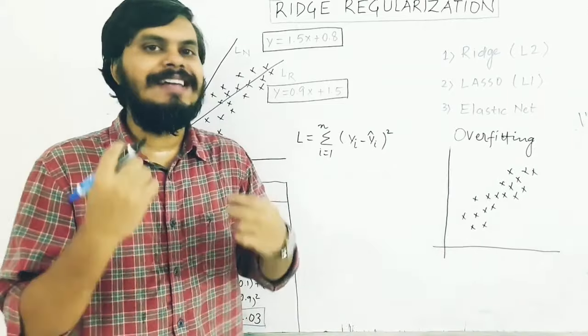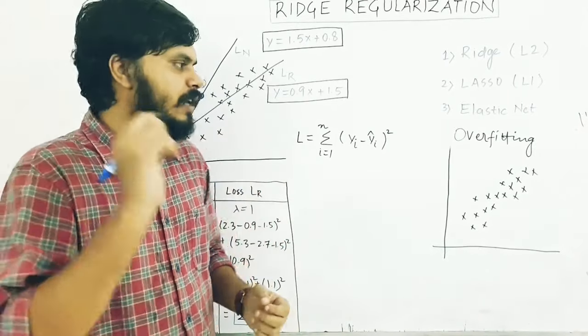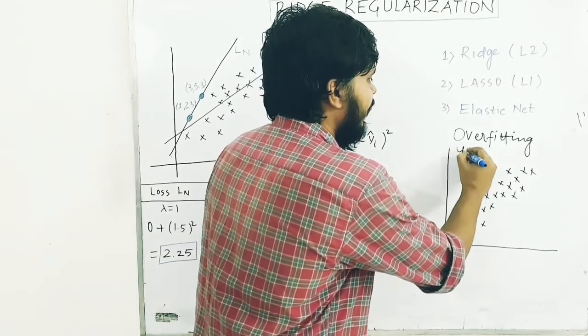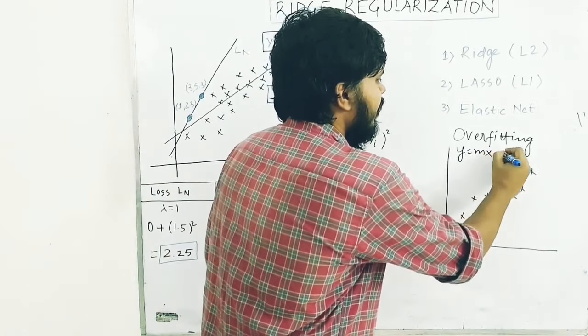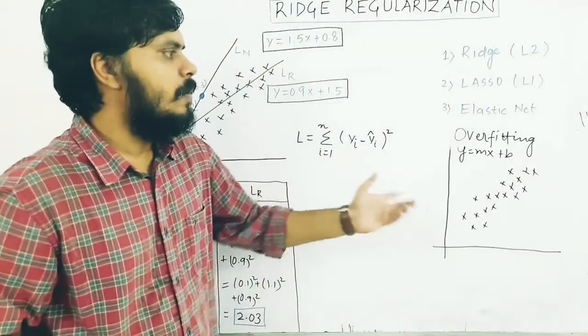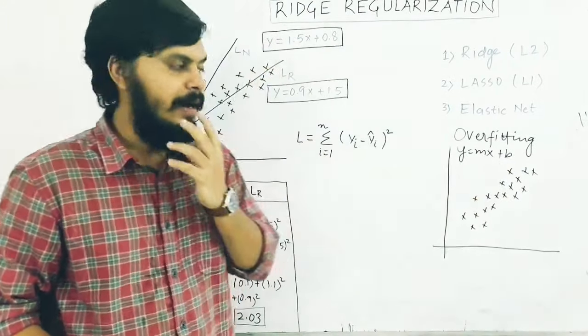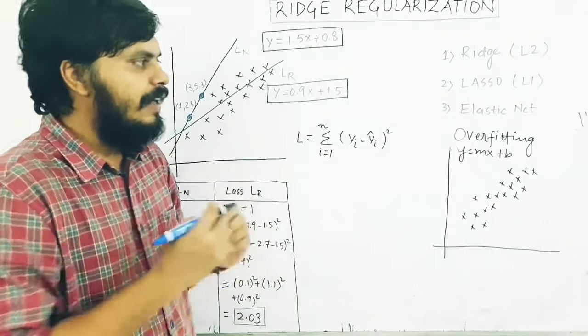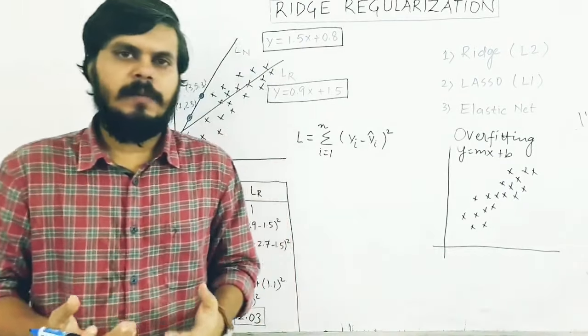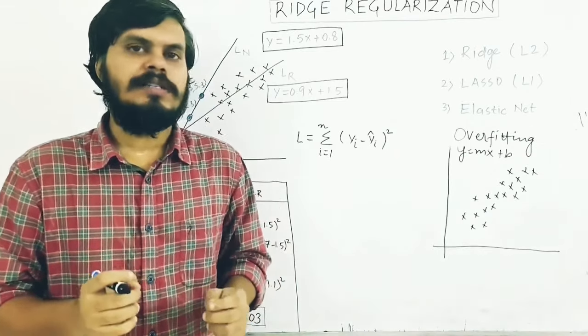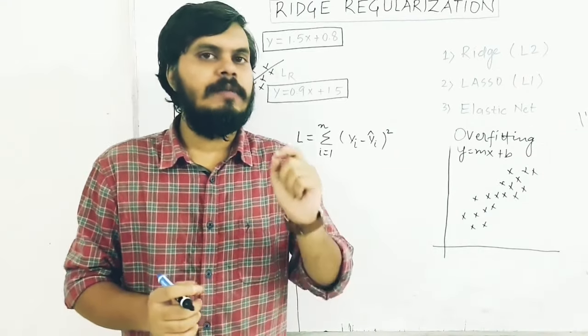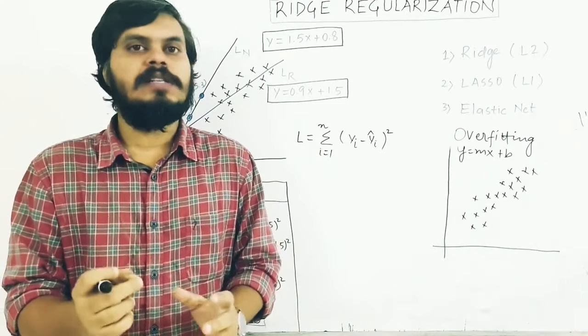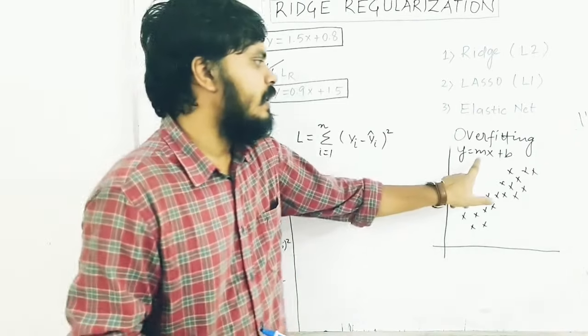Now let's look at what overfitting means in the linear regression case. The whole idea of linear regression is to find the best fit line: y equals mx plus b, where m is the slope and b is the y-intercept. If you want to directly know if a machine learning model is overfitting, you can find it by looking at the value of m, the coefficient.